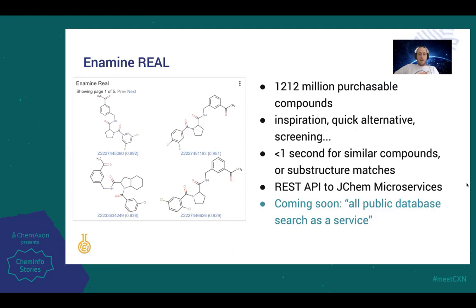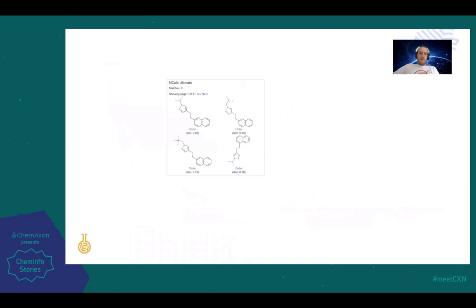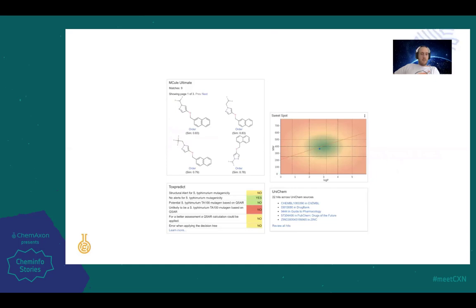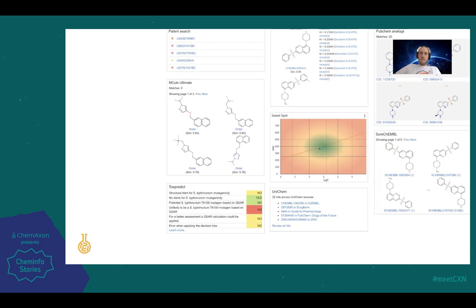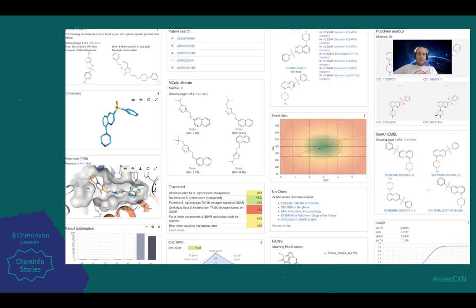Working on this even gave us the idea that we should put together an all-public database search as a service — if you're interested in that, find me in the chat window and we can talk about it. But there's a lot more we can do with plugins: connect to other purchasable compound collections like MCule's Ultimate database, create scatter plots and interesting graphics like SpeedPlot, connect to public databases like UniChem, run toxicology predictions, run patent searches, connect to ChEMBL for SAR lookup, connect to PubChem, look at exemplified structures from patents using SureChEMBL, create line charts, run substructure filters, histograms, more 3D visualizations, and more substructure features. The sky is the limit here.